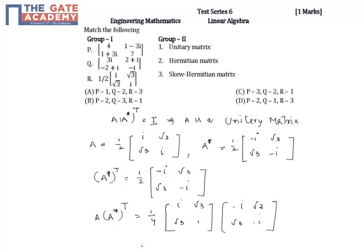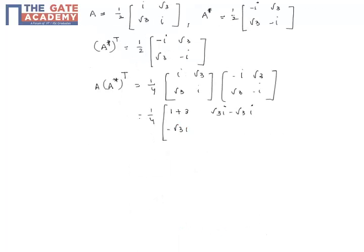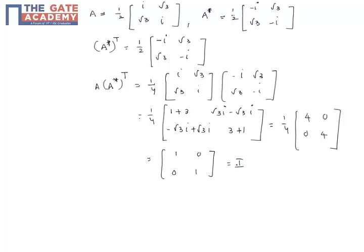This equals (1/4) times: top-left entry is -i² = 1 plus √3×√3 = 3, giving 4. Off-diagonal entries: i×√3 - √3×i = 0, and √3×(-i) + √3×i = 0. Bottom-right is √3×√3 = 3 plus (-i²) = 1, giving 4. So we get (1/4)×[[4, 0], [0, 4]], which equals the identity matrix I.